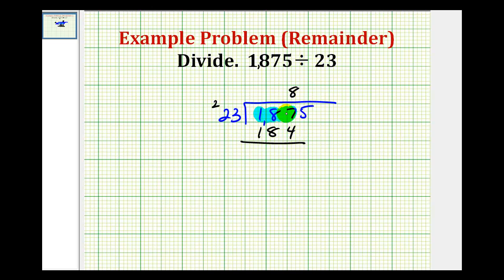184 is less than 187 and when we subtract this would be three which is less than 23. So this eight is correct and we bring down the next digit and we ask how many 23's in 35.